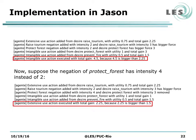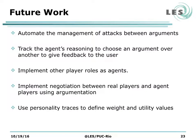This example shows the flexibility of the BDI model that makes use of argumentation — it allows the agent to deliberate and decide while eliminating conflicts between the knowledge bases. As future work, we want to automate the management of attacks between arguments. We also want to track the agent's reasoning to choose one argument over another and give feedback to the user, so the user can understand why one decision was made and not another. We also want to implement other player roles as agents, implement negotiations between real players and agent players using argumentation, and use personality traces to define intensity and utility values.